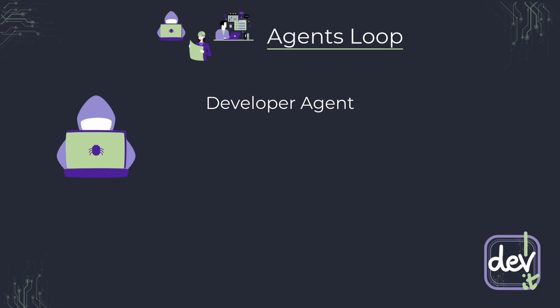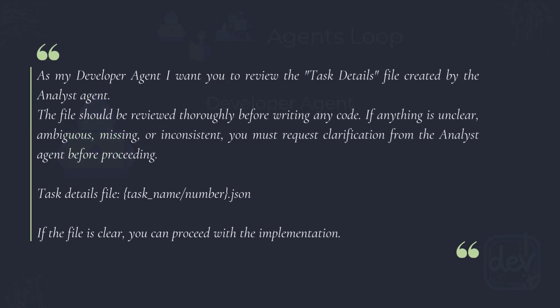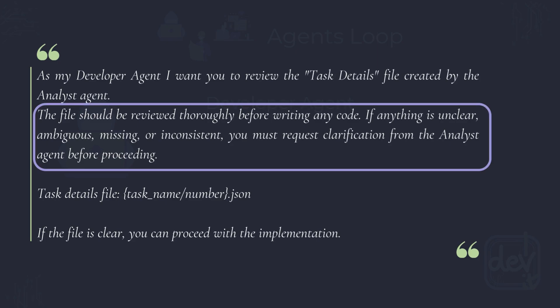Finally, we have the developer agent — this is the code writer. It doesn't make design decisions; it follows the task details file exactly. Here's the prompt to trigger it: we point it to the JSON file created by the analyst. There is a critical step: the pre-implementation check. Before writing any code, the developer agent must scan the task details file to check for problems — maybe some instructions are unclear, maybe things can be interpreted in multiple ways, or maybe different parts contradict each other. If the developer finds any issues, it must request clarification from the analyst. This is a crucial safeguard against wasted effort and errors.